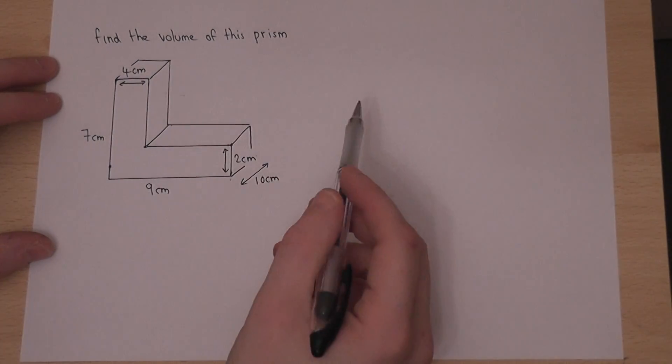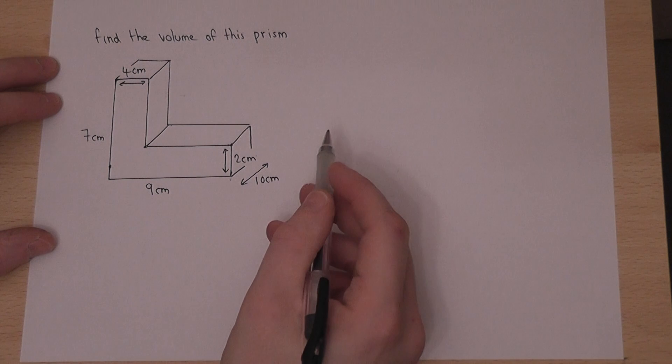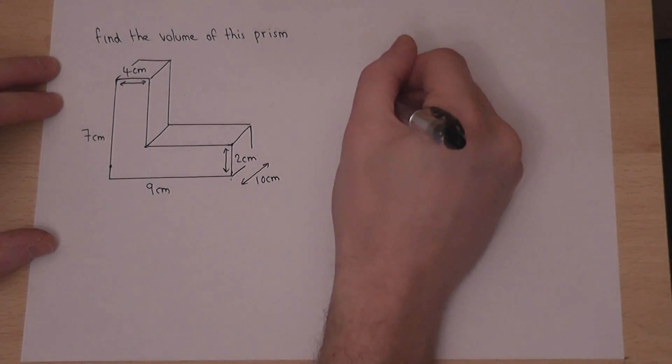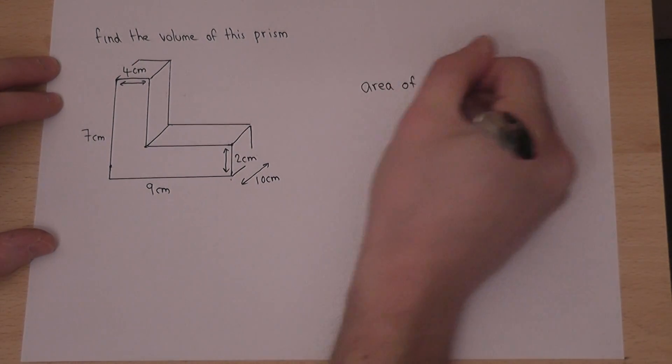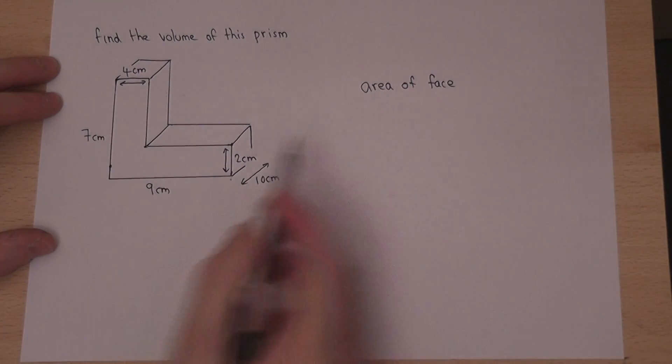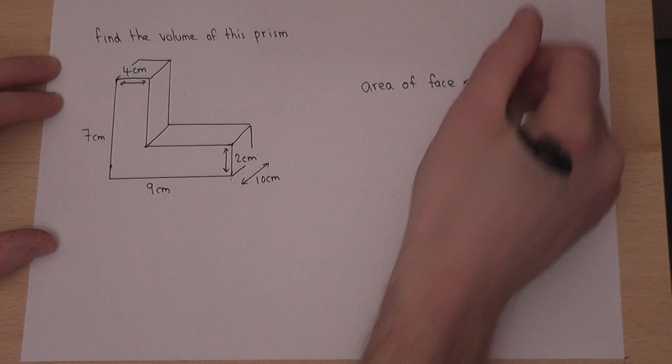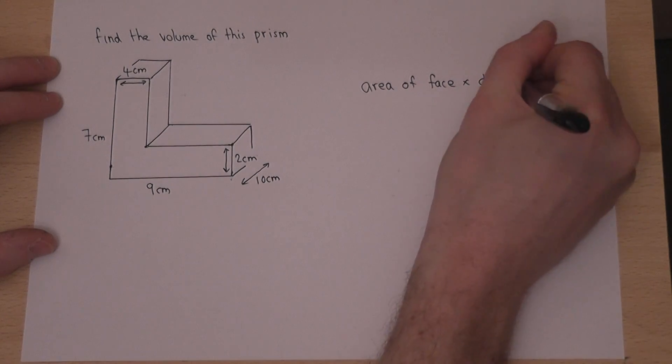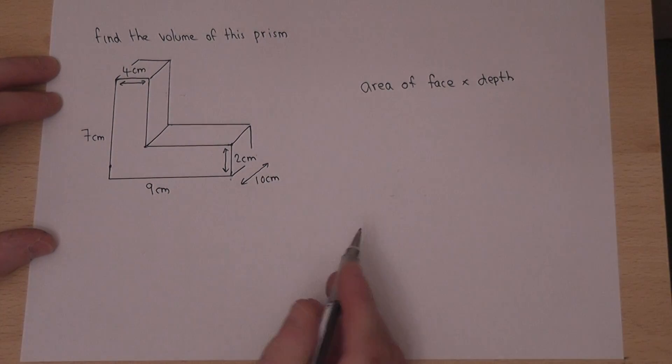To find the volume of a prism is actually quite easy. We have to find the area of the face, which in this case is an L shape, and times it by the depth of the shape, which in this case is 10 centimeters.